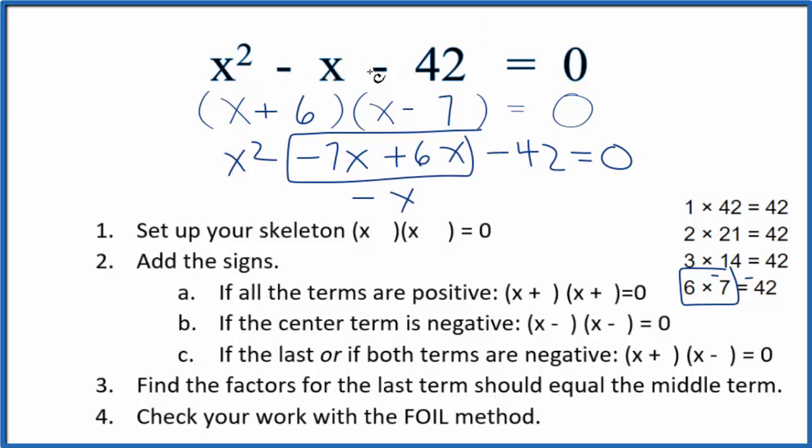Now we should figure out what numbers we can put in for x that will make this equation equal to zero. I could say x + 6 = 0, then subtract 6 from both sides and I'd get